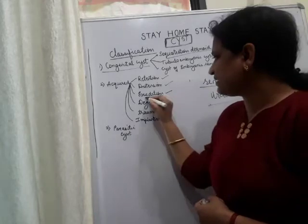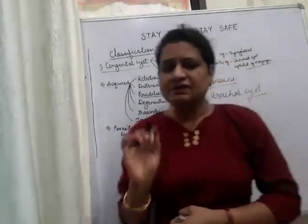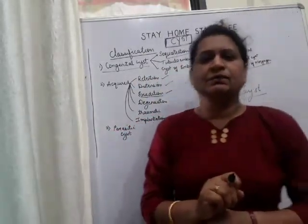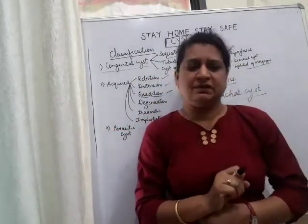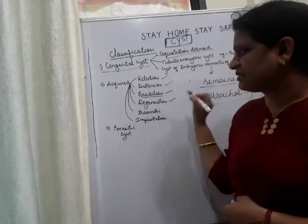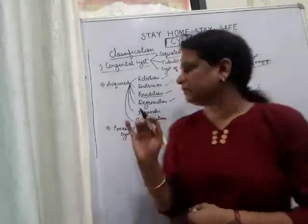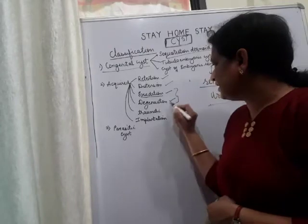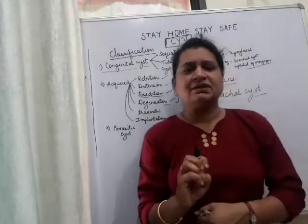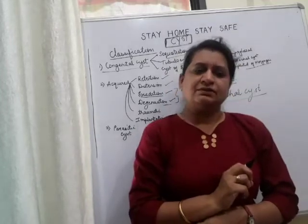The third acquired cyst is the exudation cyst. These occur in anatomical spaces already lined by endothelium or epithelium. Then there is the degeneration cyst — both of these are false cysts. A degeneration cyst involves cystic degeneration in the center of a malignant tumor.